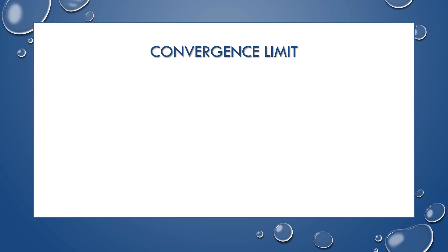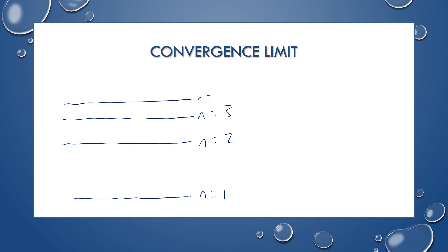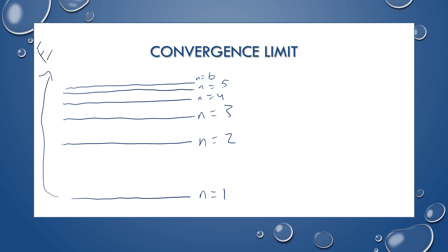Let's talk briefly about the convergence limit. If this is our first energy level, the next levels would be N equals 2, N equals 3, N equals 4, and they keep getting closer together. The difference in energy between levels gets smaller as you go higher. There is a greater difference in energy when you get closer to the nucleus compared to further away from the nucleus.